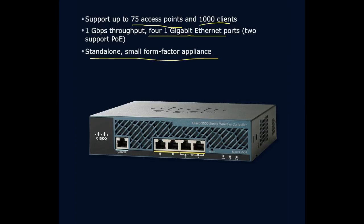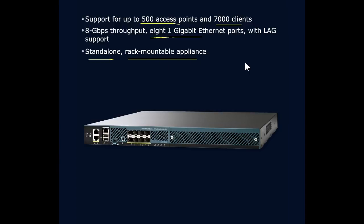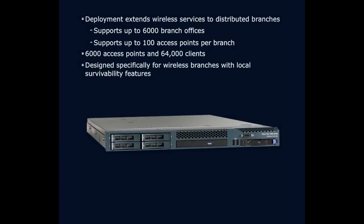If you want to build out from there, you might move to the 5500 series — maybe a 5508 or 5520. This supports 500 access points and 7,000 clients. It has eight gigabits per second of throughput with eight one-gig Ethernet ports and link aggregation available. It's designed to be either a standalone or rack-mountable appliance depending on what you're purchasing — an AirOS-based wireless LAN controller and a very commonly deployed level of device.